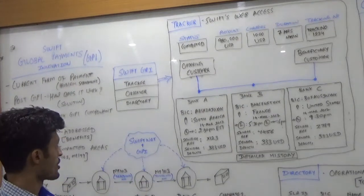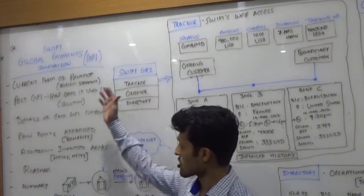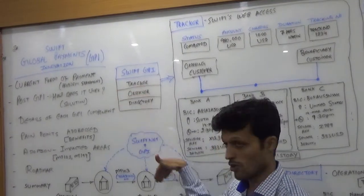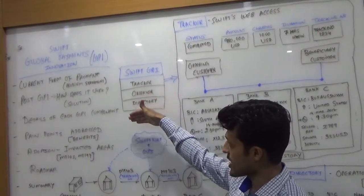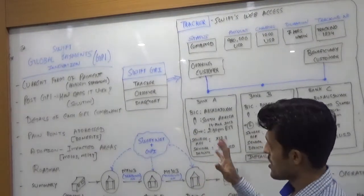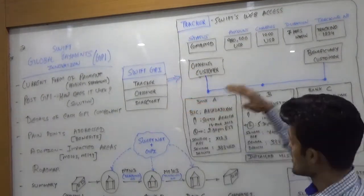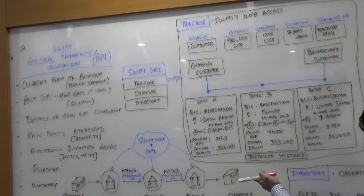Hi, so we were talking about this current form of payment that we already discussed in the post. GPI - how does it look, the details of each GPI component. I will dive deep into the GPI component now. GPI has three different components: tracker, observer, and directory. The tracker looks like this.